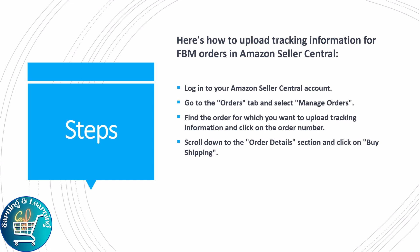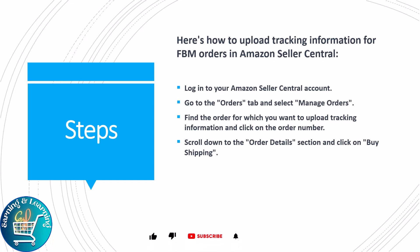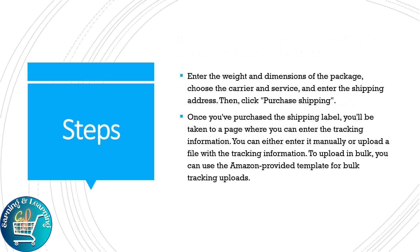Here's how to upload tracking information for an FBM order in Amazon Seller Central. Log in to your Amazon Seller Central account. Go to the Orders tab and select Manage Orders. Find the order for which you want to upload tracking information and click on the order number. Scroll down to the order details section and click on Buy Shipping. Enter the weight and dimensions of the package, then choose the carrier and service and enter the shipping address.